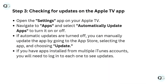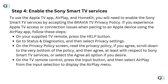Step 3: Checking for updates on the Apple TV app. Open the Settings app on your Apple TV. Navigate to Apps and select Automatically Update Apps to turn it on or off. If automatic updates are turned off, you can manually update the app by going to the App Store, selecting the app, and choosing Update. If you have apps installed from multiple iTunes accounts, you will need to log in to each one to see updates.